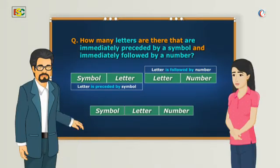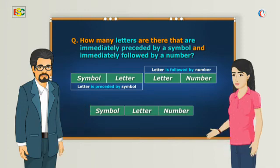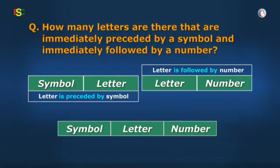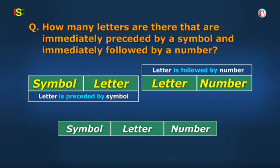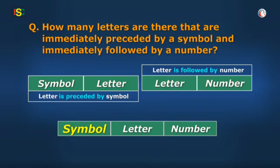Yes Vidya, are you following me? Did you get it? Baba, I am very much here and I have understood this. In this question, as we have to look for the sequences symbol-letter and letter-number together, so we have to look for the triplet: symbol, letter, and number. Exactly.